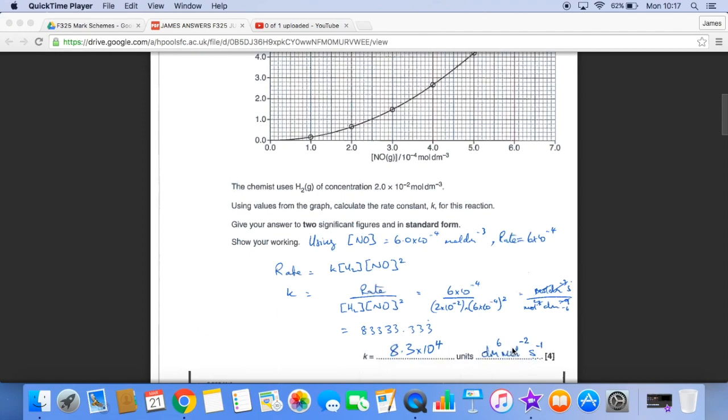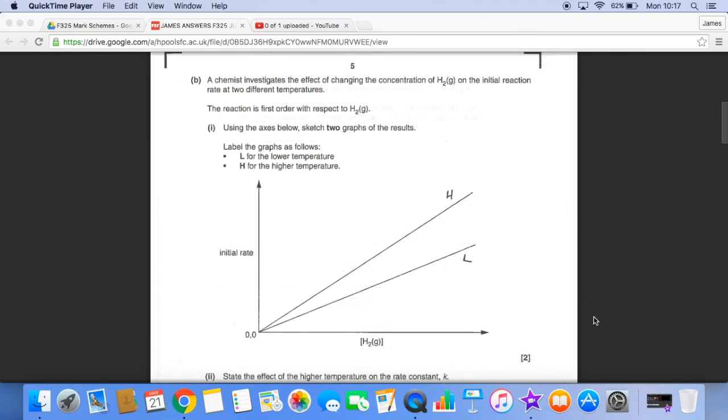Part B, so it's first order with respect to hydrogen. So rate concentration graphs for first order are straight lines which must start at the origin.